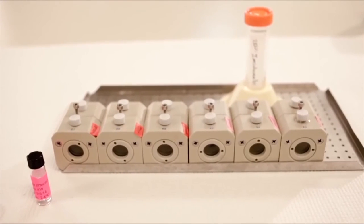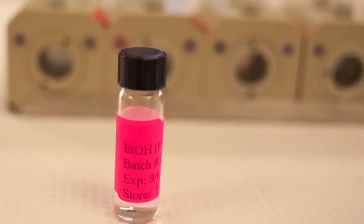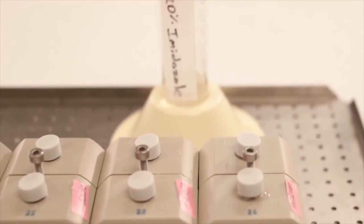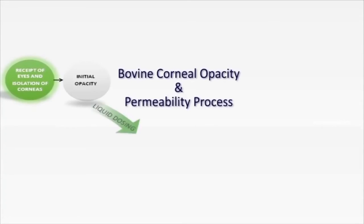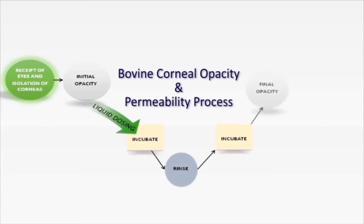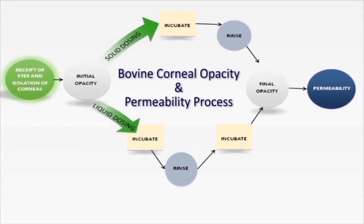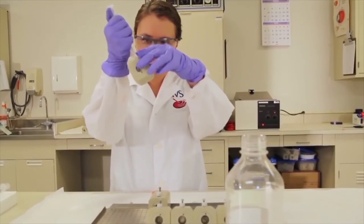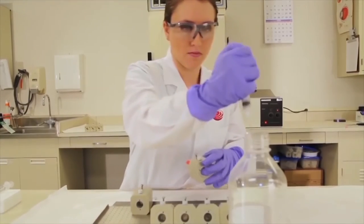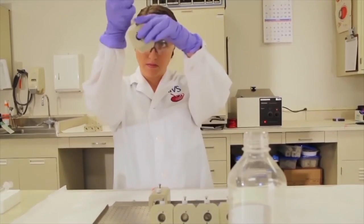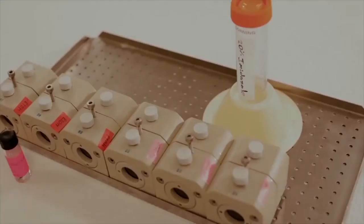Now that corneas have been assigned to treatment groups, they are prepared for dosing. Before dosing, the media is removed from the anterior chamber and the chamber is re-aspirated to remove any remaining medium — it is important to remove as much media as possible to reduce dilution of the test article. Liquid test articles can be tested undiluted or, for surfactants, at 10% concentration in a solvent. When dosing most liquid test substances, the closed chamber method is used. Some liquid materials that are viscous, semi-solids, creams, or waxes are applied using a positive displacement pipette by the open chamber method, which is also used for solids.